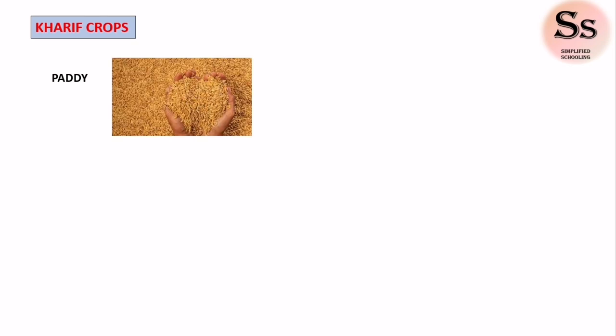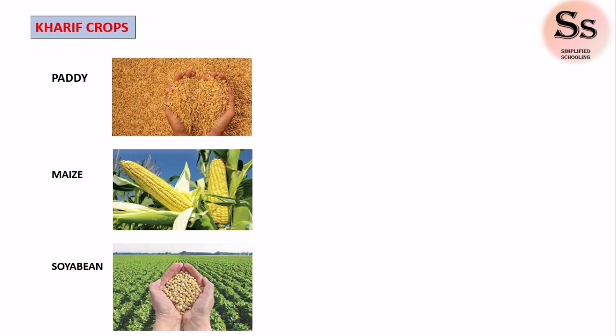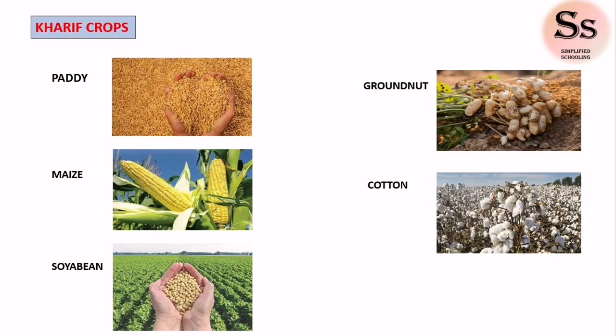Now let's look at the examples of Kharif crops. The first is paddy, which is a rice plant — when rice is in unprocessed form along with its outer cover, it is known as paddy. Second is maize, also known as corn. Third is soybean. Fourth is groundnut, also known as peanut. And the fifth is cotton.